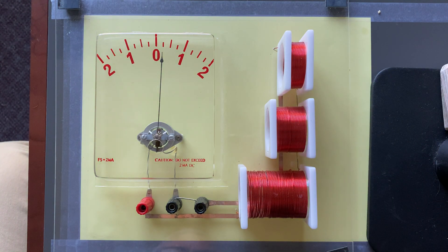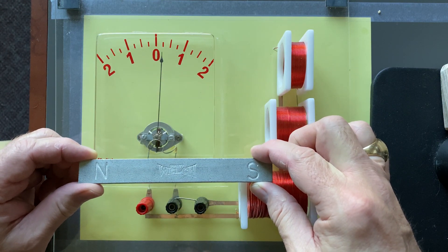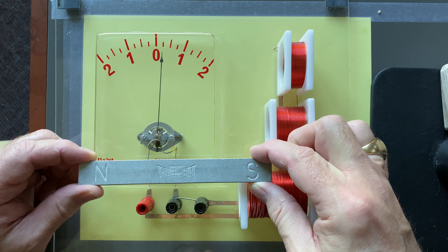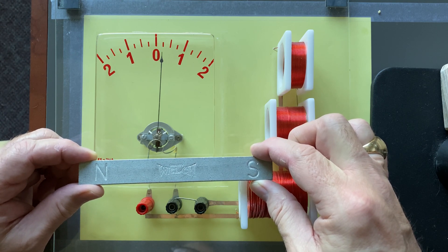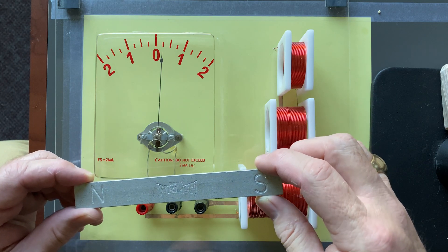Now, I also have here an old school bar magnet. You can see it's got a north pole and a south pole on it. I'm going to put the bar magnet into each of these coils, and I want you to watch the galvanometer as I do this.